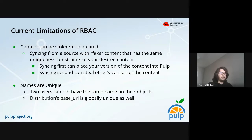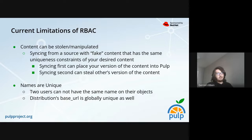If user Alice creates a repository named 'production', no other user in the system can create a repository named 'production'. This doubly applies to the distribution's base URL for getting content — the base URL has to be unique across all distributions so the content app can match back to the distribution. A lot of times people like to use the same common identifiers for their objects, so if a user has a distribution named 'production', no other user can have a distribution named 'production'.